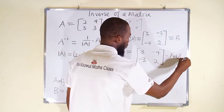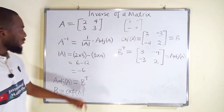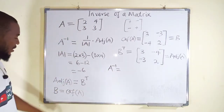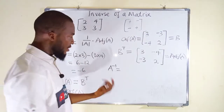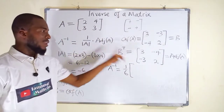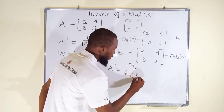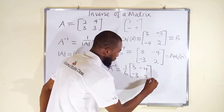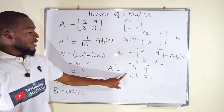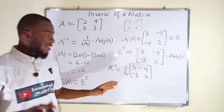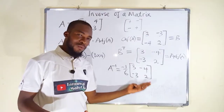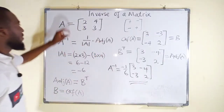Finally, to find A inverse: it is 1 over the determinant multiplied by the adjoint. The determinant is negative 6, so we have negative 1 over 6. Multiplied by the adjoint, which has entries 3, negative 3, negative 4, and positive 2. If you like, you can take negative 1 over 6 as a scalar and multiply each entry, or you can leave your answer in this form. This is the inverse of matrix A.